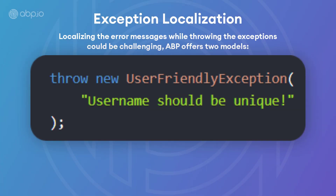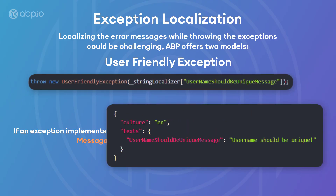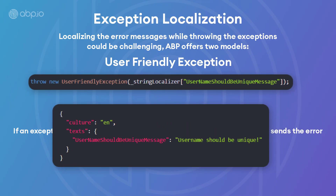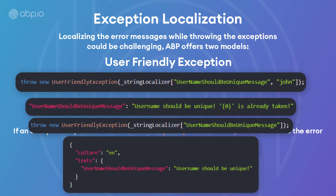The first model is the user-friendly exception. If your exception implements the IUserFriendlyException interface, then ABP sends the error message and details directly to the client. You can inject and use the standard string localizer for this one, and it already supports parameterized messages. However, this approach forces you to inject the string localizer everywhere and always use it while throwing exceptions, and you won't be able to inject it in a static context or an entity method.